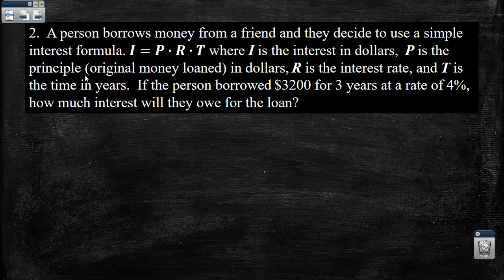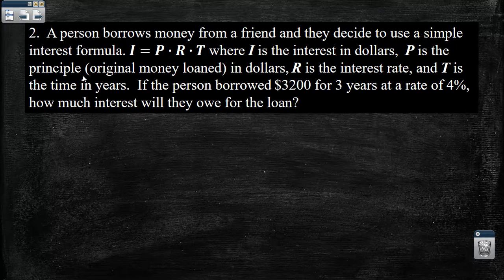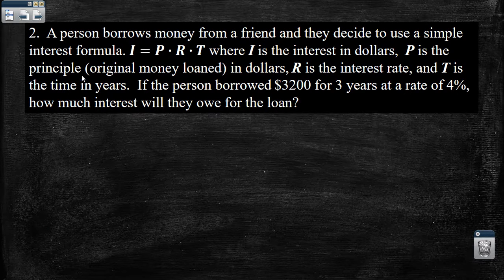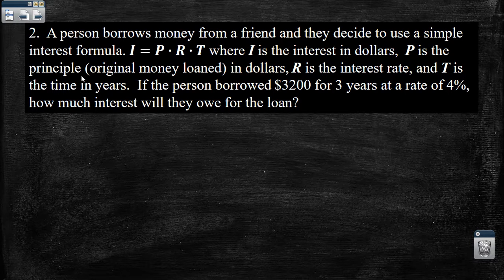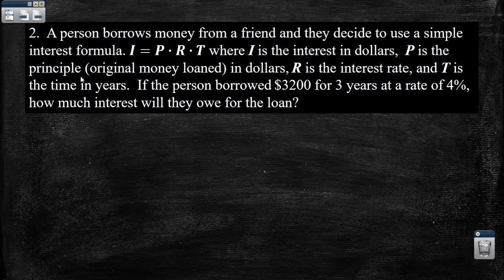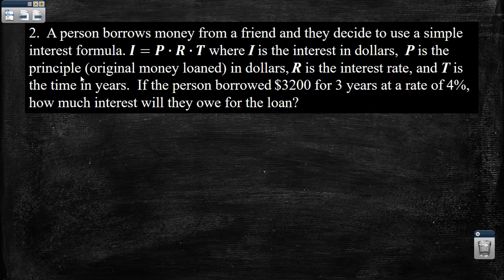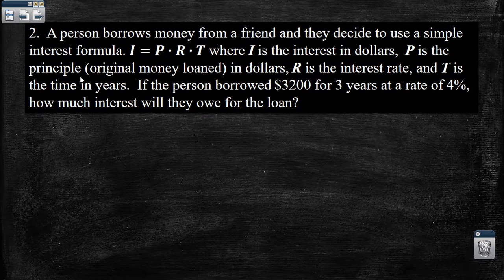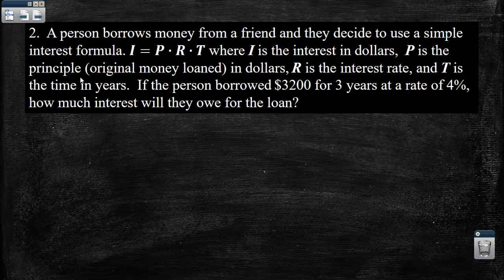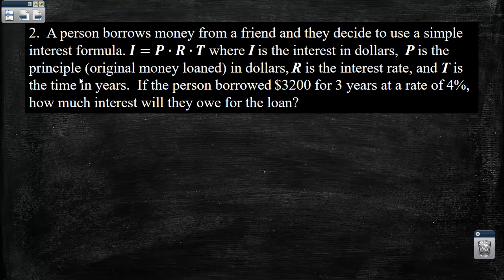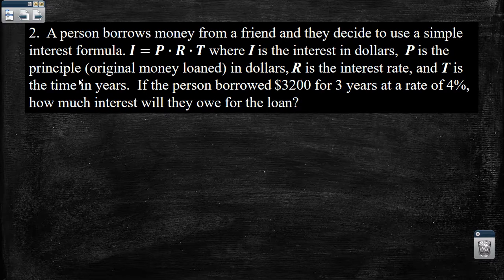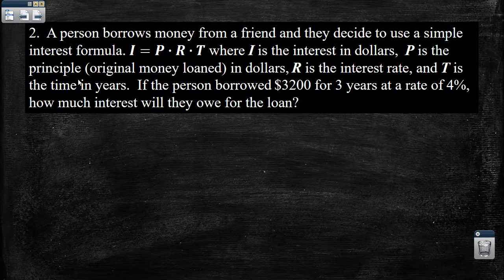This one reads, a person borrows money from a friend and they decide to use a simple interest formula. I is equal to P times R times T, where I is the interest in dollars, P is the principal, the original money loaned in dollars, R is the interest rate, and T is time in years. If the person borrows $3,200 for 3 years at a rate of 4%, how much interest will they owe for the loan?